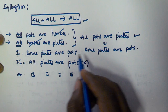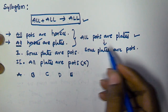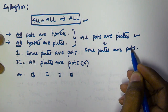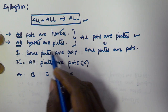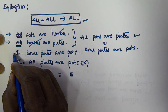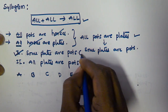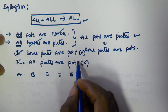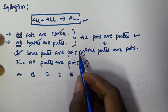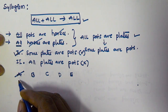Now checking the first conclusion: when we interchanged, we got 'Some plates are parts,' which exactly matches conclusion one — 'Some plates are parts.' So conclusion one is true. From these two conclusions, only conclusion one is true, so we have to select option A.